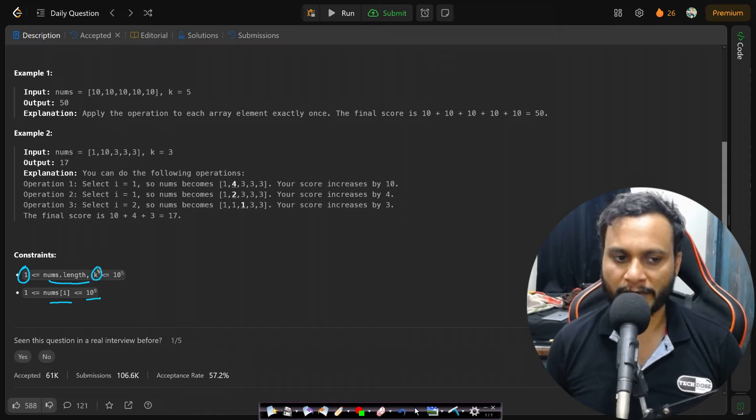Let's say you end up having k value equals to 10 to the power of 5 and the nums length is also similar. Then the maximum score that you can end up with is 10 to the power of 9 added 10 to the power of 5 times, which can be 10 to the power of 14.